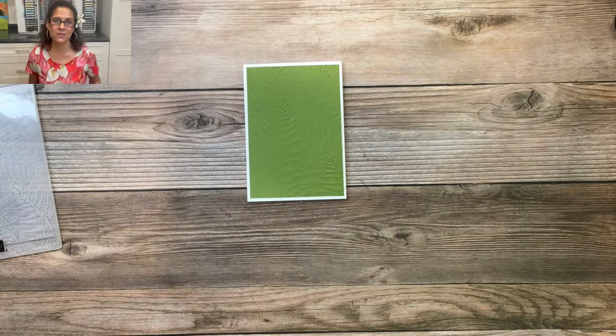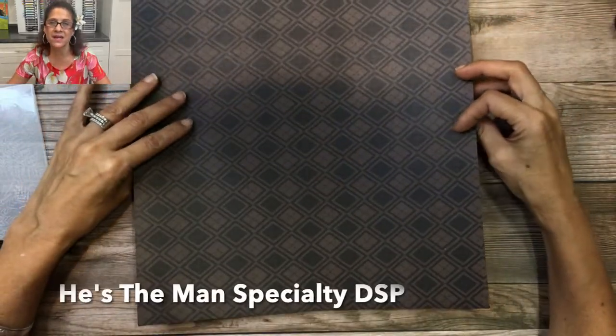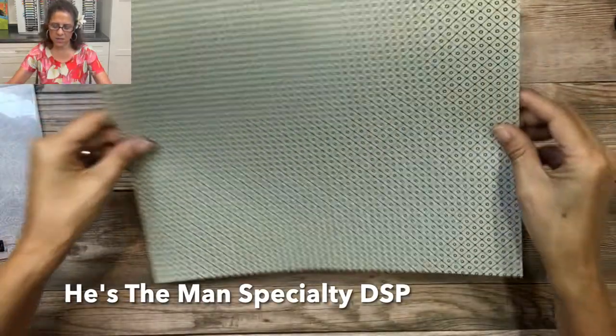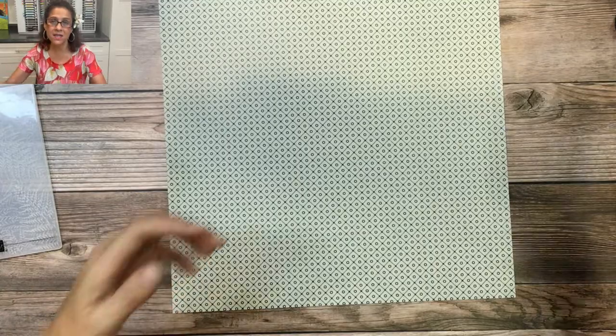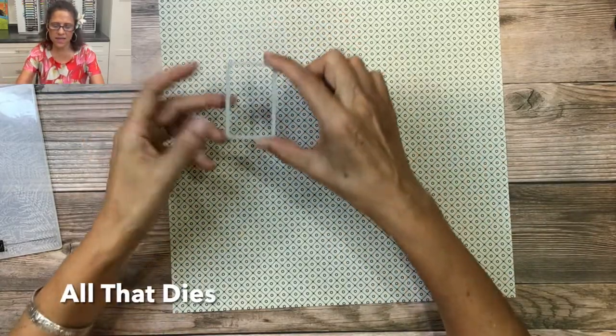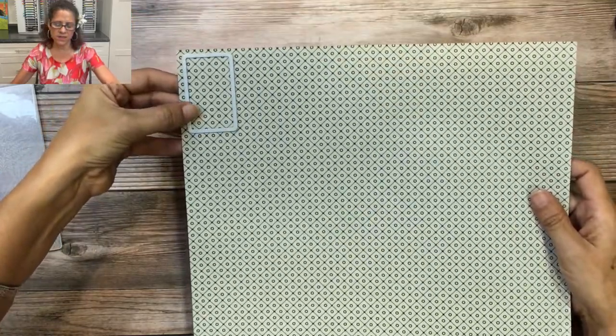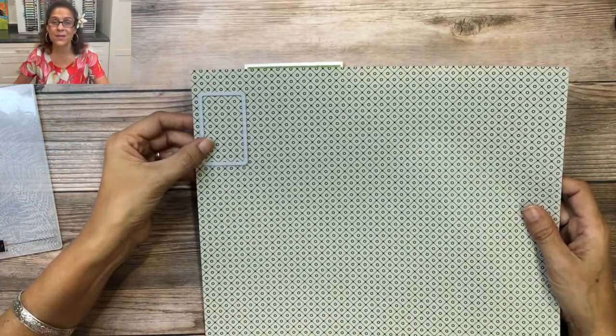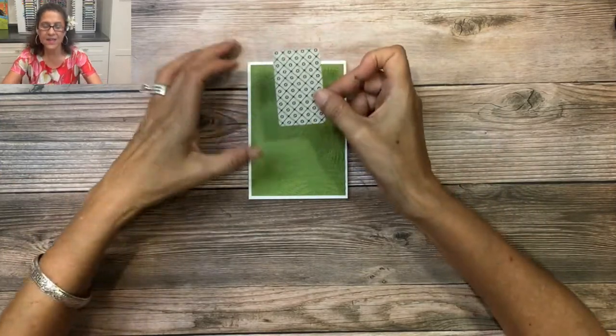Next, we're going to be using some Designer Series paper. I'm going to use this 12 by 12 sheet that comes from the He's the Man Designer Series paper, and I'm going to use this piece right here. I'm going to take one of the dies from the He's All That dies, and it looks like this, and then I'm going to cut out a little piece of this Designer Series paper using my Stamp and Cut and Emboss machine. Once it's been die cut, it's going to look like this, and now we want to add some color.